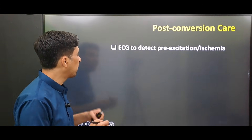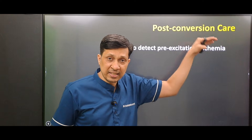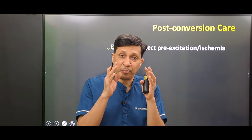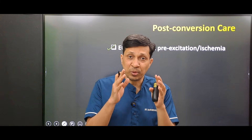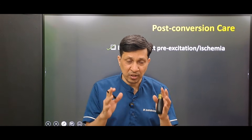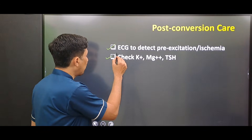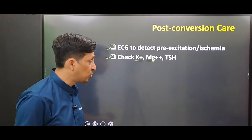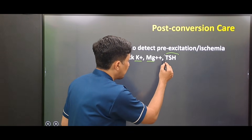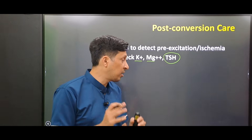First, you will do an ECG to detect if there is any pre-excitation or ischemia — signs that may be masked during SVT and become visible once the patient is in sinus rhythm. Then you will check electrolytes like potassium and magnesium, and also assess thyroid status, as these can be causes of supraventricular tachycardia.